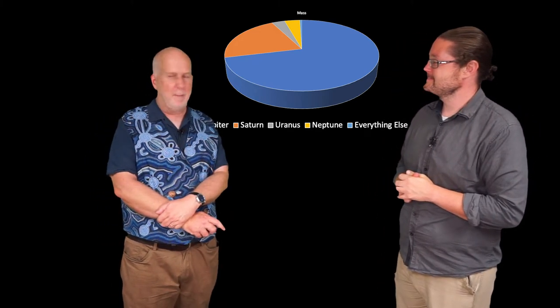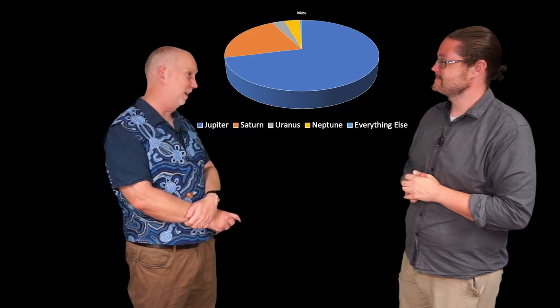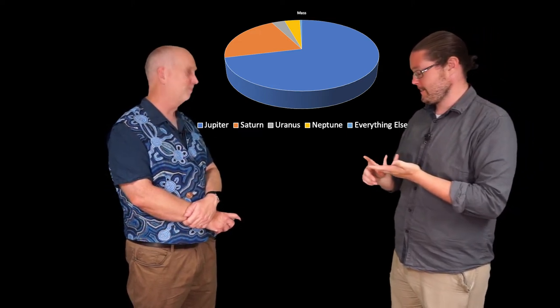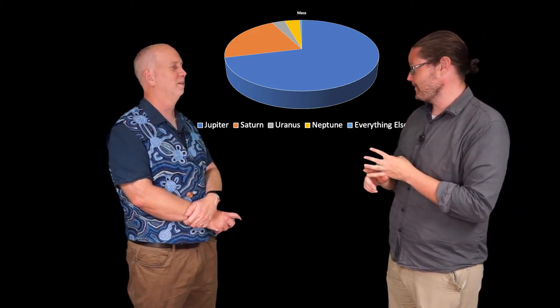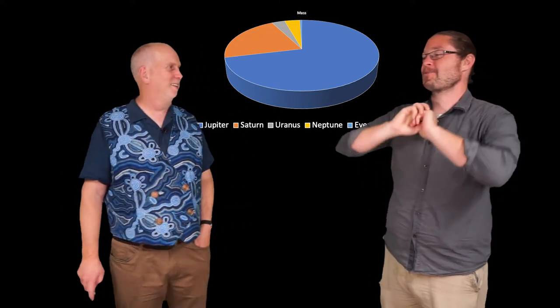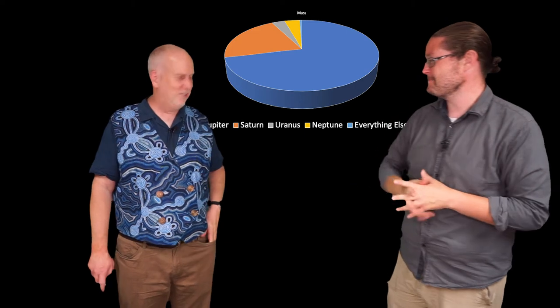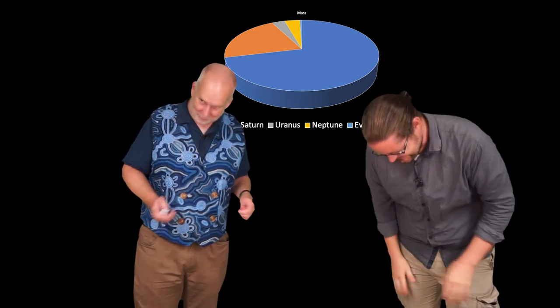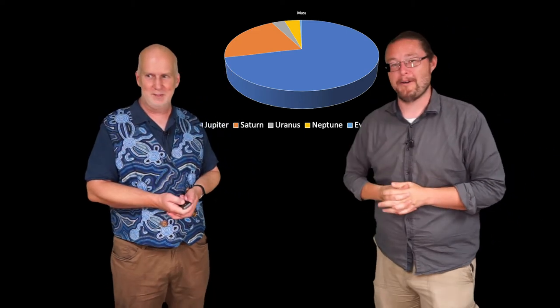And then most of that remaining 10% is Uranus and Neptune. So what you're saying is Mercury, Venus, Earth, Mars are pretty meaningless. We're the crumbs of the solar system. Not even the crumbs. We're much smaller than crumbs. Well, talk about making us feel small, Paul.